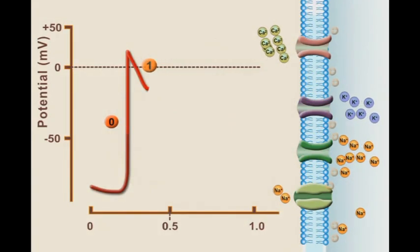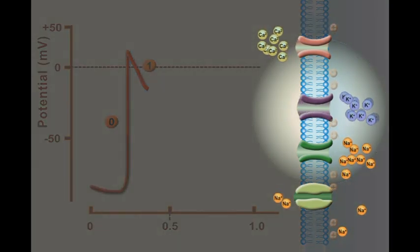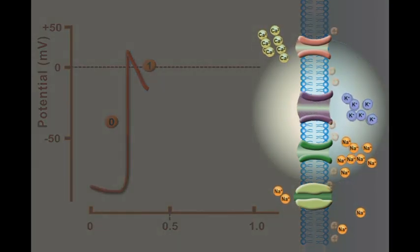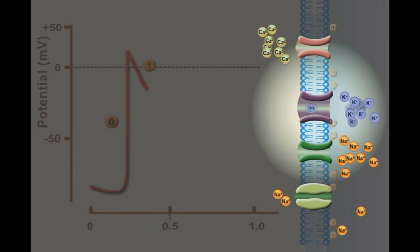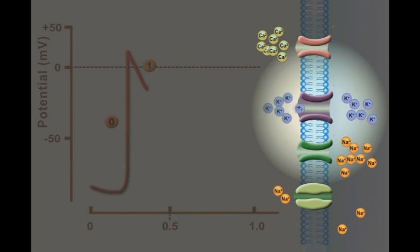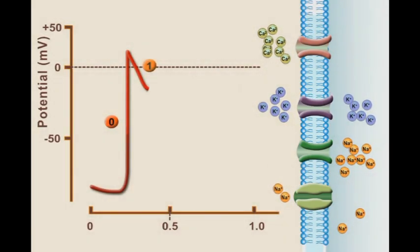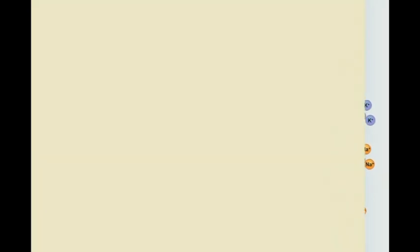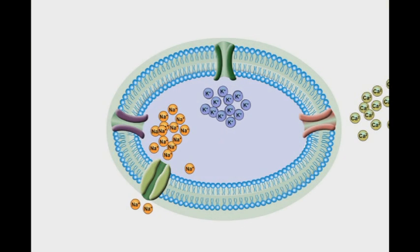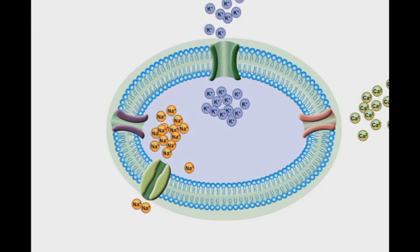In phase one, there is rapid repolarization caused by the opening of potassium channels, which allow the efflux of positively charged potassium ions outside the cells. At the same time, fast sodium channels are suddenly closed. This phase is the shortest phase.